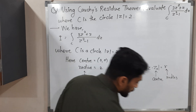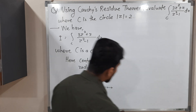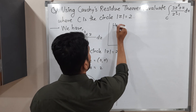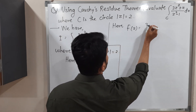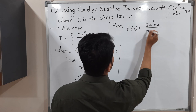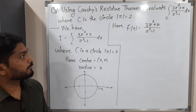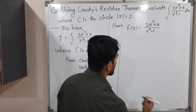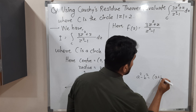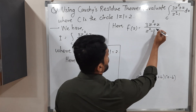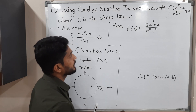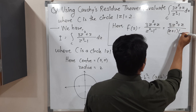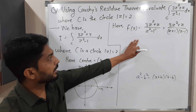So let us focus on the function now. What is the function we have? f(z) = (3z² + z) / (z² - 1). They have given f(z) but at the denominator we have a polynomial, so I will find its factors using the a² - b² = (a+b)(a-b) formula. So this becomes (3z² + z) / [(z+1)(z-1)].